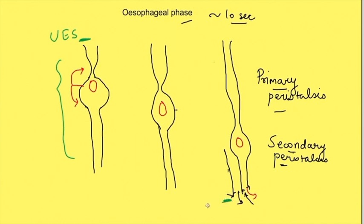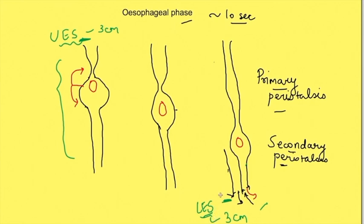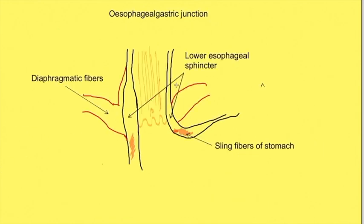The esophagus is functionally divided into the upper esophageal sphincter, the esophageal body, and the lower esophageal sphincter. The upper esophageal sphincter forms the upper 3 cm of the esophagus and the lower esophageal sphincter forms the lower 3 cm. The upper esophageal sphincter relaxes in the pharyngeal phase; similarly, as the food bolus passes from the esophagus to the stomach, the lower esophageal sphincter relaxes due to the peristaltic wave. However, normally the LES is tonically contracted — it is always kept in a contracted state.